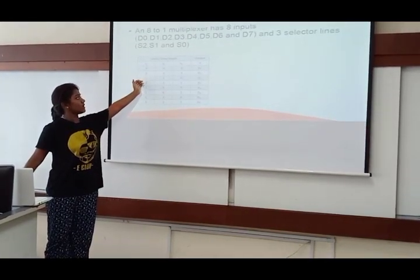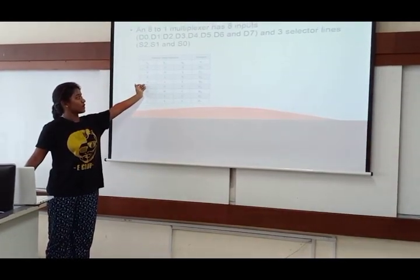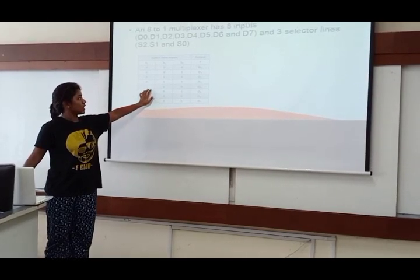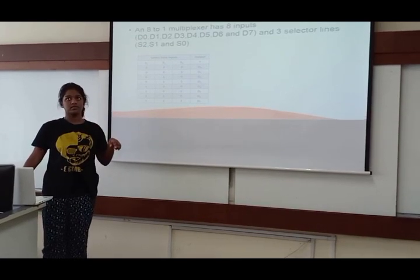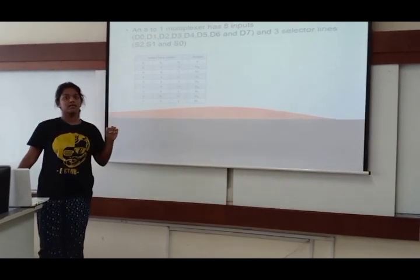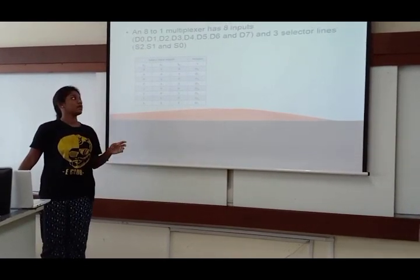And then same goes to 0, 0, 1, and 0, 1, 0, and 0, 1, 1, and 1, 0, 0. We did up to D4, which means only 5 of the LEDs light in the FPGA board.